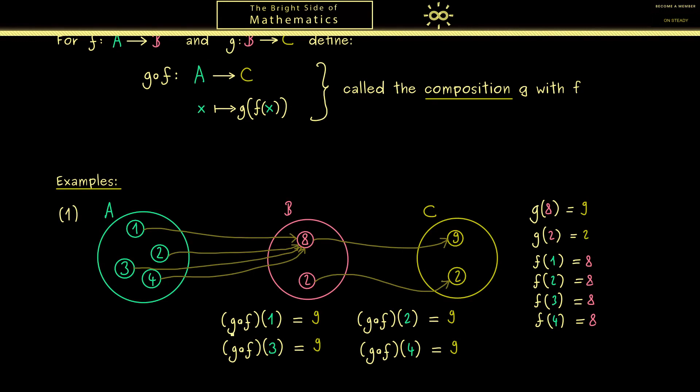Here you see and please keep that in mind we read the composition from right to left. So we first apply F and then we apply G. In this example the other way around wouldn't make any sense.